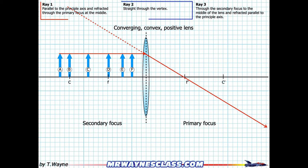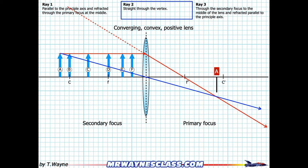Ray two in blue goes straight through the vertex — from A straight through the middle of the lens, it just keeps going. Again, virtual side on the left and real side on the right. Where these two rays cross, that's where the tip of A will be found, and the bottom of A will be along the axis itself. So A will look like this from the axis to where they cross.